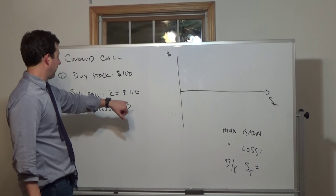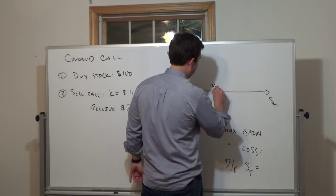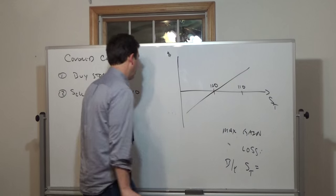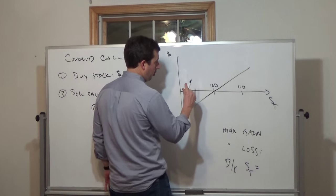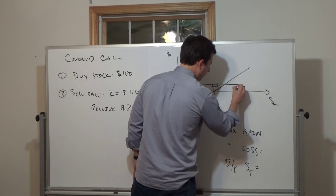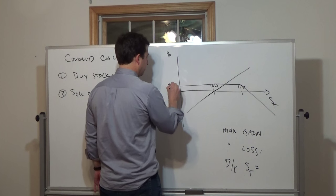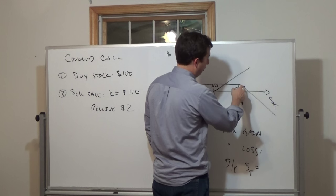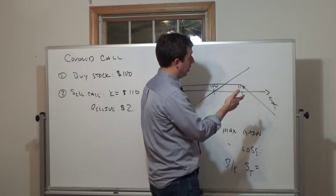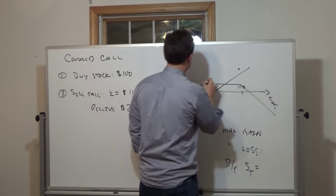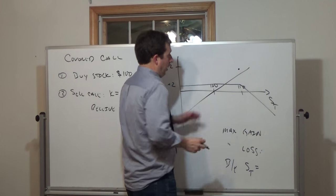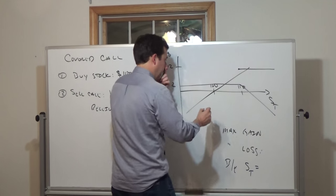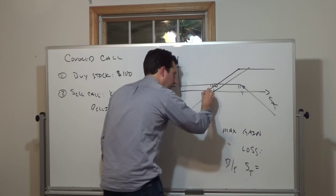We bought the stock for $100 and the call has a strike of $110. P&L on the stock is again simply a line with slope of one. We receive $2 on the call, so the payoff on the call we sold is flat up until $110 and then decreases. At $110, we gain $10 on the stock and $2 on the option, so plus $12. When the stock is above $110, whatever we gain on the stock we lose on the call, so the combined position is flat from that point, and below $110 it follows the stock line all the way down.